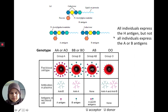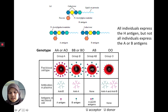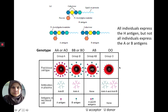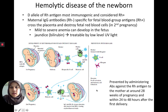To summarize blood types: group A has anti-B and the type A antigen; group B has the type B antigen and anti-A; group AB has no antibodies because they have both A and B antigens; and group O has anti-A and anti-B but none of the antigens. As we know, AB is the universal acceptor and O is the universal donor.